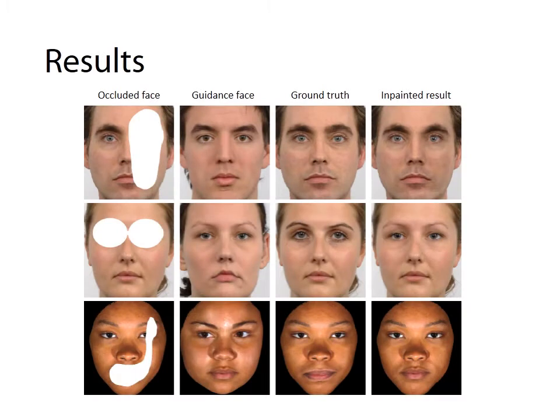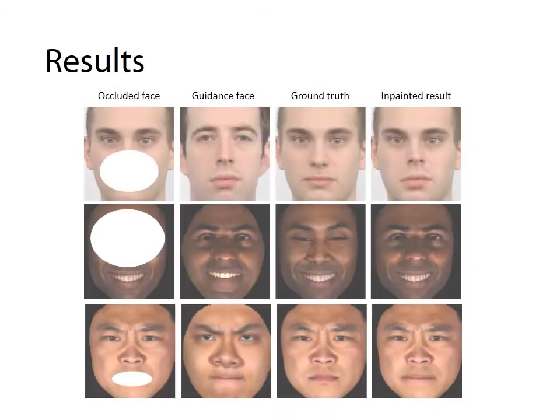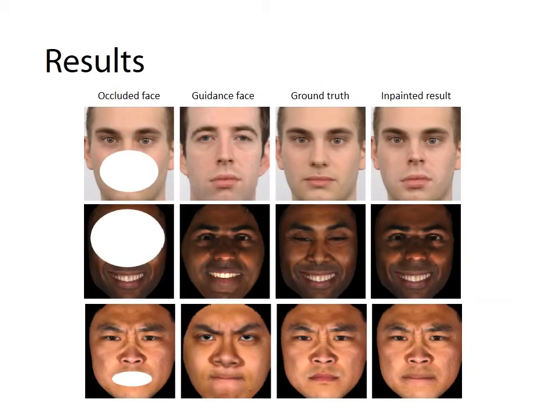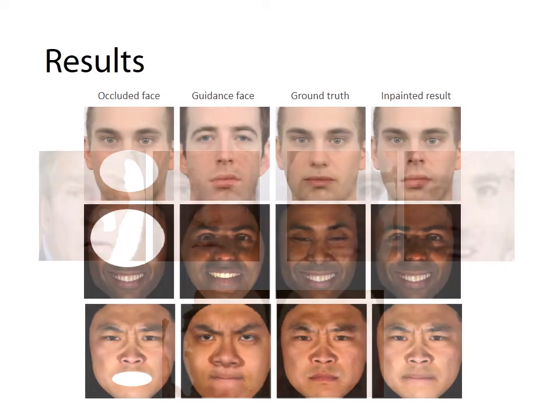Here shows different inpainting results. Our approach can satisfactorily repair occluded faces of different genders, ethnicities, and skin tones, and showing different expressions. Our approach can also be applied to inpaint the missing regions of frontalized faces, resulting from the originally occluded regions of oblique faces.